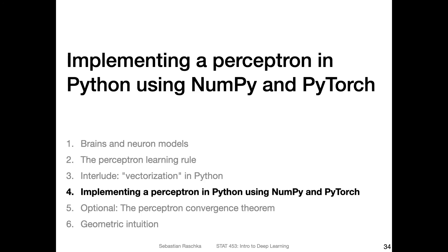Moving on — this was a short interlude into vectorization. I explained things in more detail in the NumPy resource and video series I shared with you. But here that was just the minimum we need for the next section: implementing a perceptron in Python using NumPy and PyTorch.